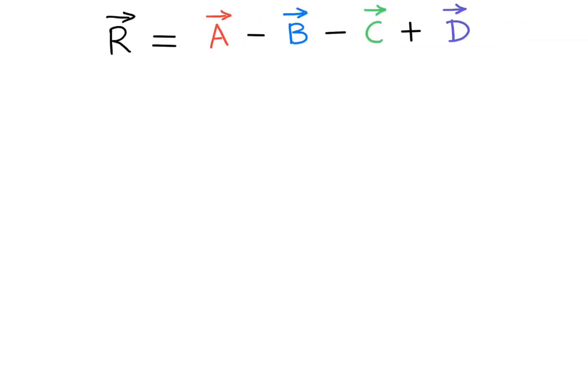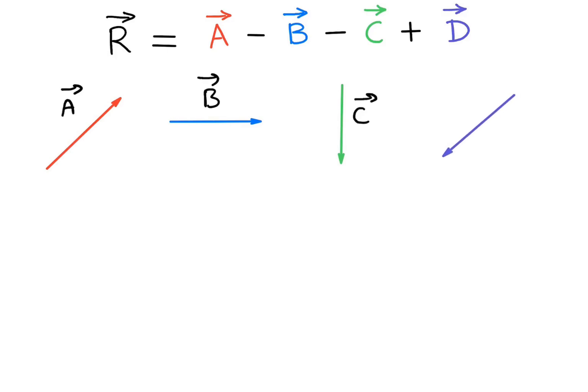Now what if instead of addition of four vectors, we have subtraction? Here we need to find a vector minus b vector minus c vector plus d vector. Let's define the vectors again: this is vector a, this is vector b, this is vector c, and this is vector d.